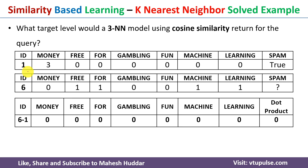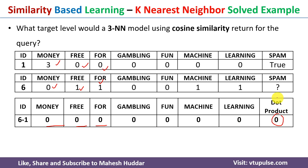First we calculate the dot product between example 6 and example 1. We multiply: 0 times 3 is 0, 1 times 0 is 0, 1 times 0 is 0, and so on. Once we calculate all these values we take the summation, which equals 0. That is the dot product between the new example 6 and the first example 1.